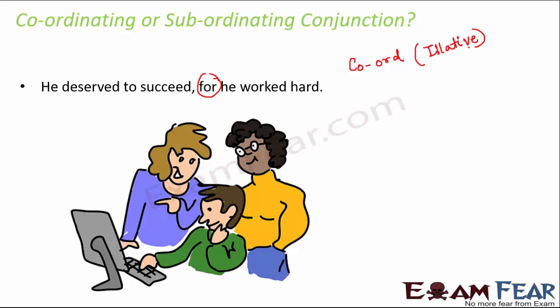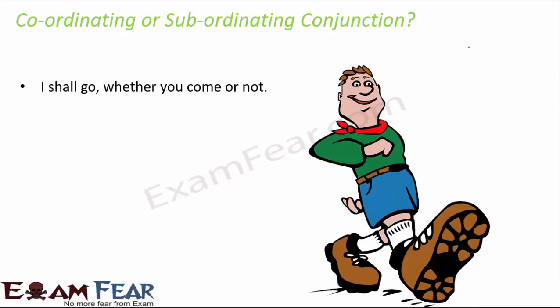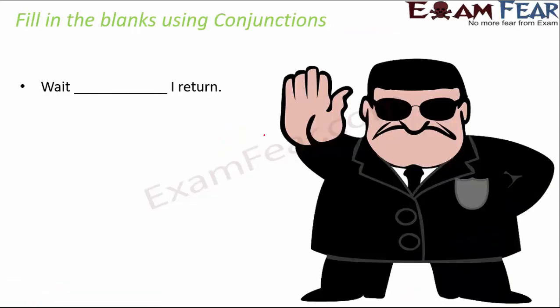'I shall go whether you come or not.' Here again it is an alternative — whether you come, or you do not come. Since we are talking about options, it is a coordinating conjunction and it is an alternative type of coordinating conjunction.